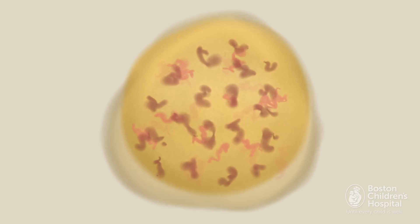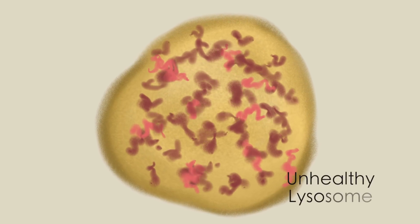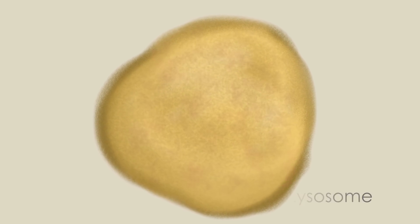But in Mila's cells, the lysosomes aren't working, and they start to fill up. The cell tries making additional lysosomes, but it eventually becomes overwhelmed and dies.